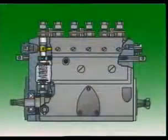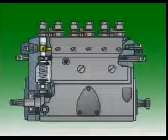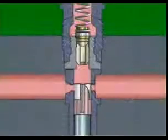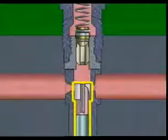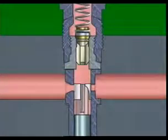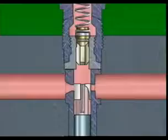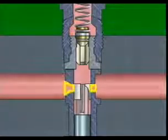Inside the pump is a pumping element and a delivery valve for each cylinder of the engine. The element has a barrel and a plunger that fits inside it. Their accurate fit and highly polished finish ensures only minimal fuel leakage past them without needing positive seals.